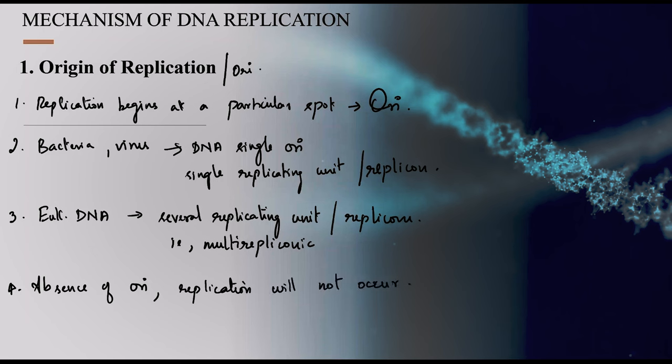To summarize the first step — the origin of replication, also called ORI, is the beginning spot of the replication process. Bacteria and viruses have a single ORI, while eukaryotes are multi-repliconic with many replicating units. In the absence of ORI, replication will not occur.